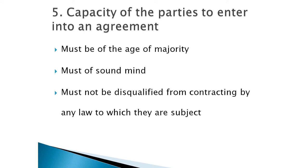There are three categories under this essential. First, the parties must have attained the age of majority — a minor is incapable of entering into a contract. Second, a person of sound mind; a person of unsound mind is incapable of entering into a contract. Third, the person must not be disqualified from contracting by any law to which they are subject.